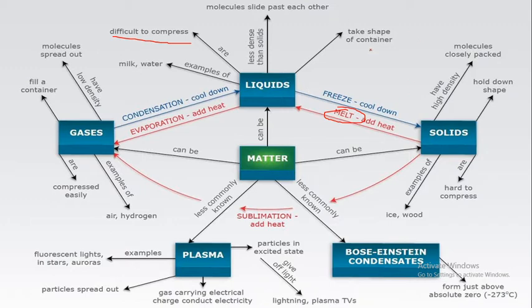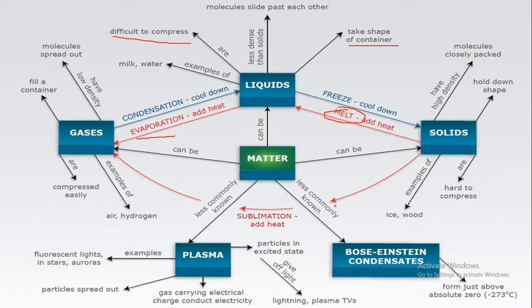Liquids take the shape of the container in which they are stored. Examples of liquids are milk, water, and oils. When these liquids are heated, they start converting into gaseous form. That process is called evaporation or boiling. Gases have no fixed shape and no fixed volume.